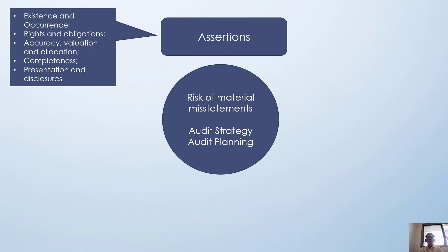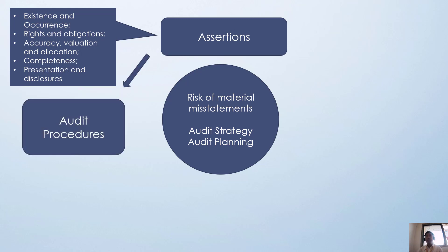The categories or titles of assertions include: existence and occurrence, rights and obligations, accuracy, valuation and allocation, completeness, and presentation and disclosures. Those assertions are provided by the company. As an auditor, what we need to do is determine the appropriate audit procedures to perform.